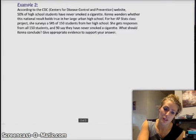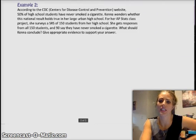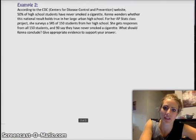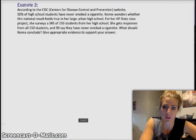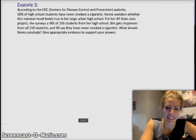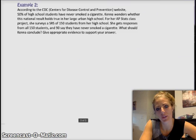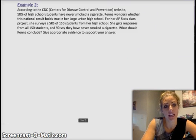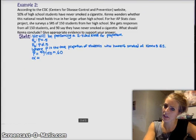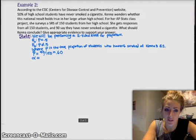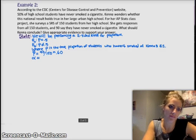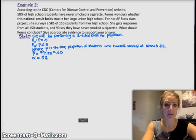The second example is a two-sided test. According to the CDC, 50% of high school students have never smoked a cigarette. A student wonders whether the national result holds true for her high school. She took a simple random sample of 150 students, gets responses from all of them, and 90 say they've never smoked a cigarette. What should she conclude? Give appropriate evidence to support your answer. In this case, you're doing a two-sided test with proportions. Here's my state. The only thing is they didn't give us an alpha level. When in doubt, 5% is pretty good. We're going to say we're going to conduct this at a 5% alpha level, significance level. Next up is plan.